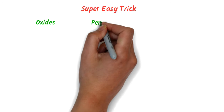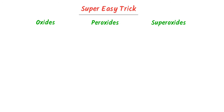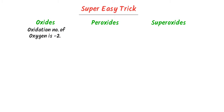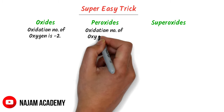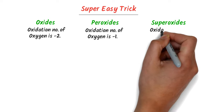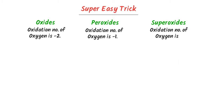The super easy trick to find oxides, peroxides and superoxides. When the oxidation number of oxygen is minus 2 in any compound, it is oxide. When the oxidation number of oxygen is minus 1 in any compound, it is peroxide. When the oxidation number of oxygen is minus 1/2, it is superoxide.